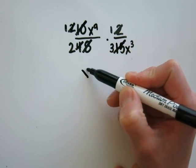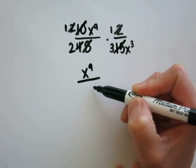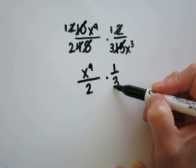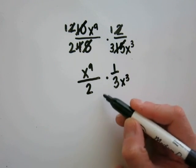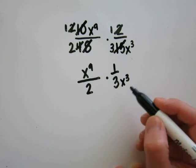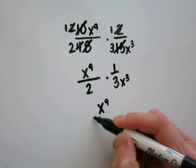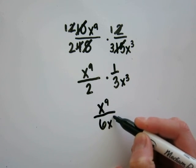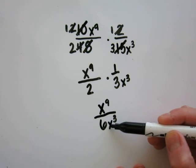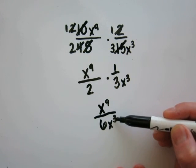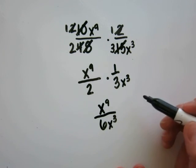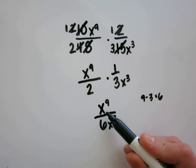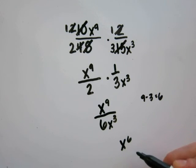Now I'm going to rewrite what I'm left with: x to the 9th power over 2, times 1 over 3, times x cubed. 2 times 3 is 6. Now I have the same base of x, so I can subtract my exponents, since when you're dividing, the exponents get subtracted. So 9 minus 3 is 6, which becomes x to the 6th power.